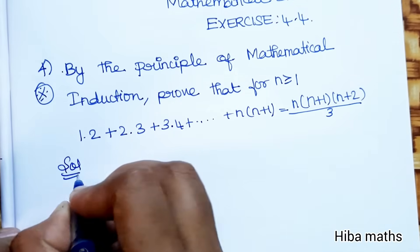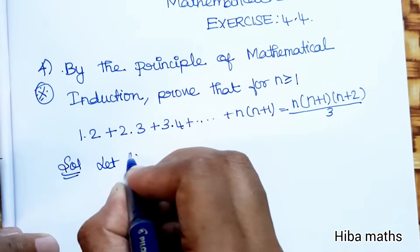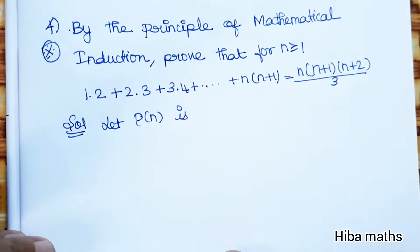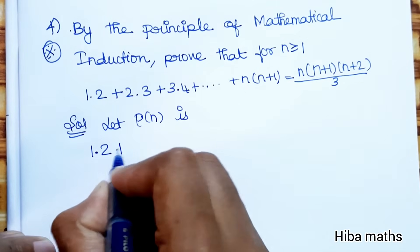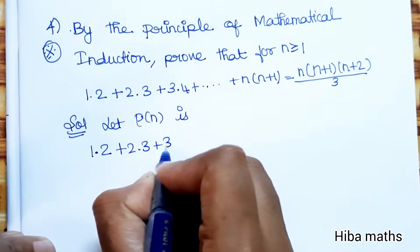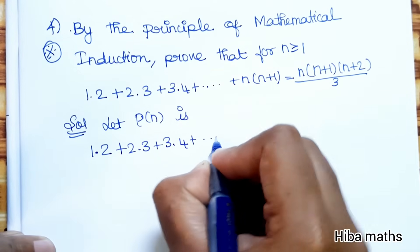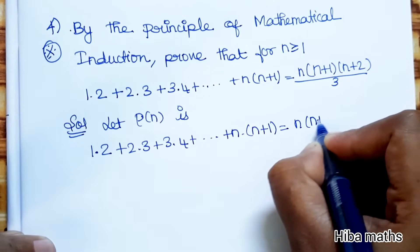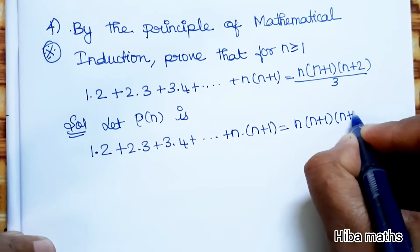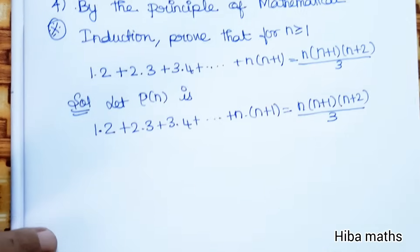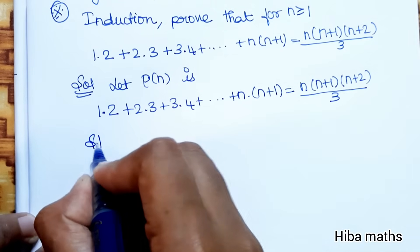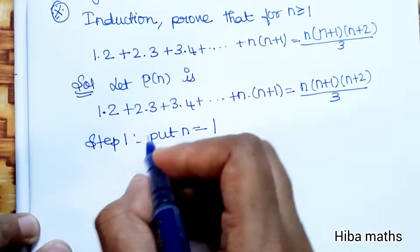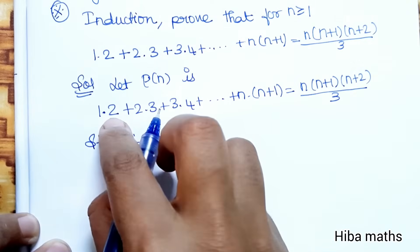Solution: Let P(n) be the statement. That statement is: 1·2 + 2·3 + 3·4 + ... + n(n+1) = n(n+1)(n+2) / 3. Step 1: Put n = 1. When n = 1, we substitute into the nth term.